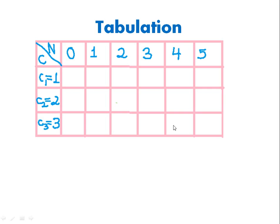The rows represent different coin sets. The first row asks: if I have only the 1-rupee coin, can I make n equals 0, 1, 2, up to 5? The second row asks: if I have 1-rupee and 2-rupee coins, can I make n equals 0 through 5? The third row asks: if I have 1, 2, and 3-rupee coins, can I make n equals 0 through 5?